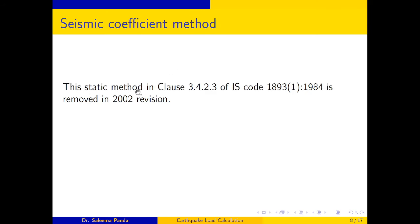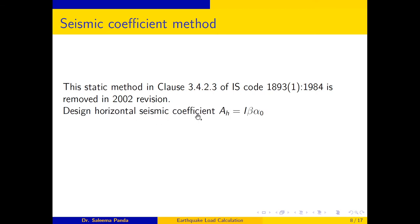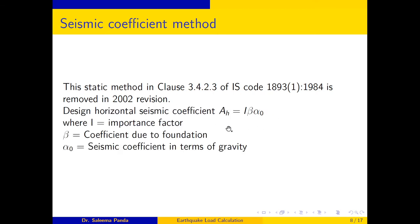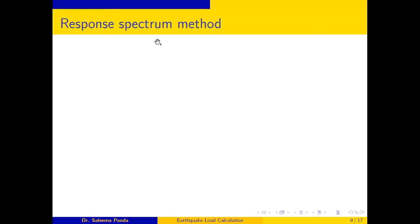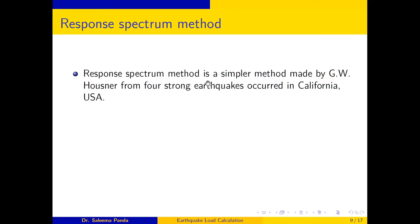The Seismic Coefficient Method is a static method given in clause 3.4.2.3 of the old IS code from 1984; it has now been removed and is no longer used. In that method, Ah was given by I × β × α₀, where I is the importance factor, β is the foundation coefficient, and α₀ is the basic seismic coefficient in terms of gravity. These values were specified in the code but are now obsolete.